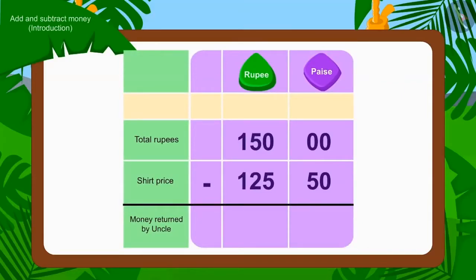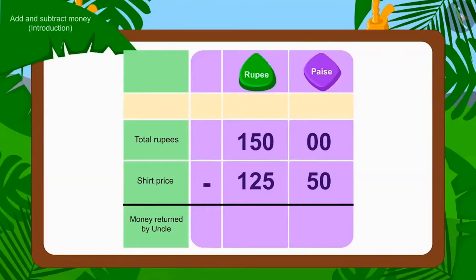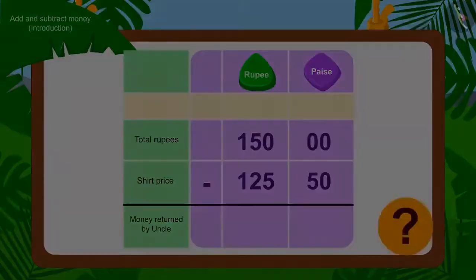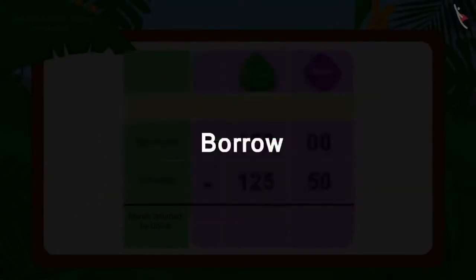Children, what operation do we have to use to find this out? While subtracting, we first subtract the number of paise. Is there any paise for Rs. 150? No. Then how will we subtract 50 paise of Rs. 125.50 from 0 paise of Rs. 150? Do you remember the borrowing process learned in the lesson of subtraction? Here, we will use the borrowing process.